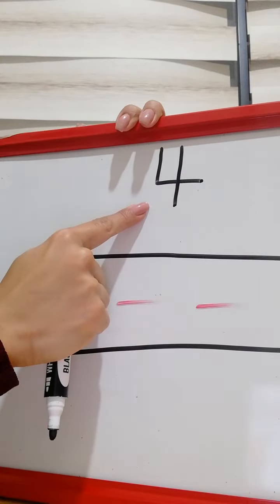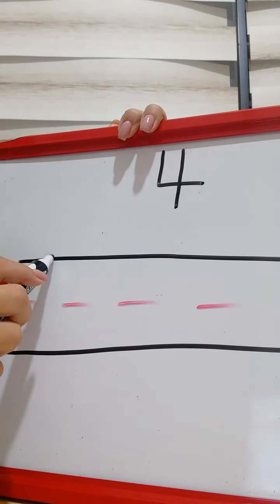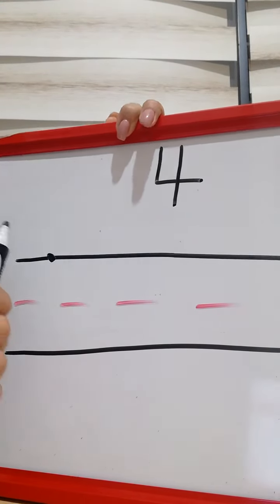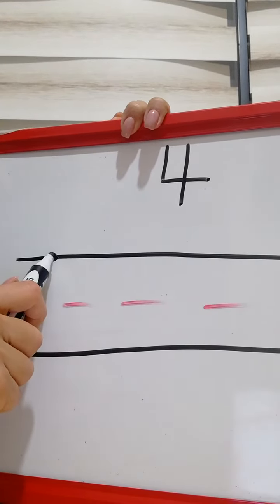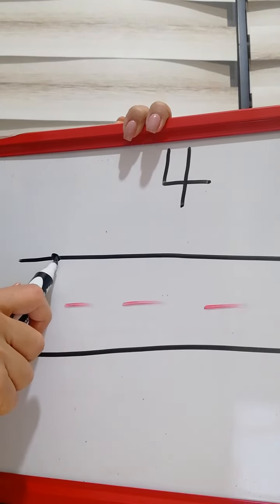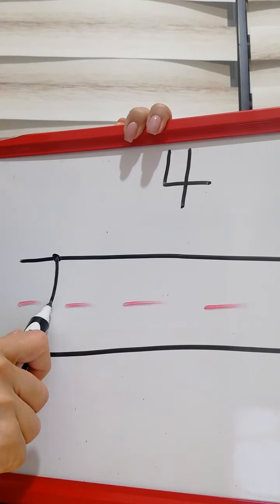This is number four. We start at the top line. We always start at the top line. When you see a dot, look, you start at the dot. You make a vertical line until you reach the middle line or the dotted line.